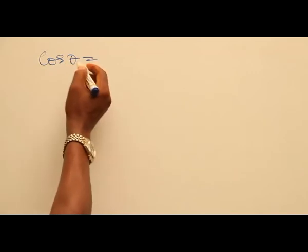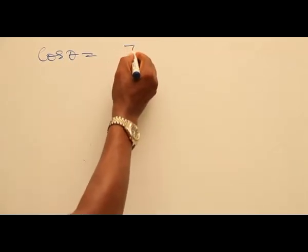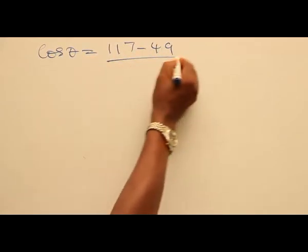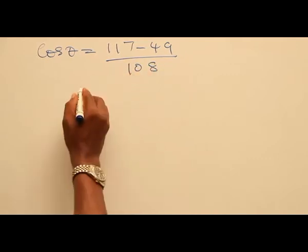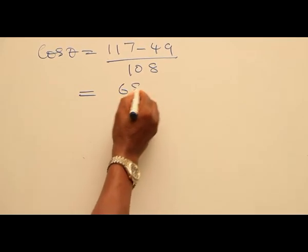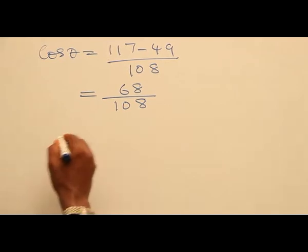81 plus 36 gives you 117, minus 49, all over 108. If you subtract 49 from 117, you have 68 over 108.